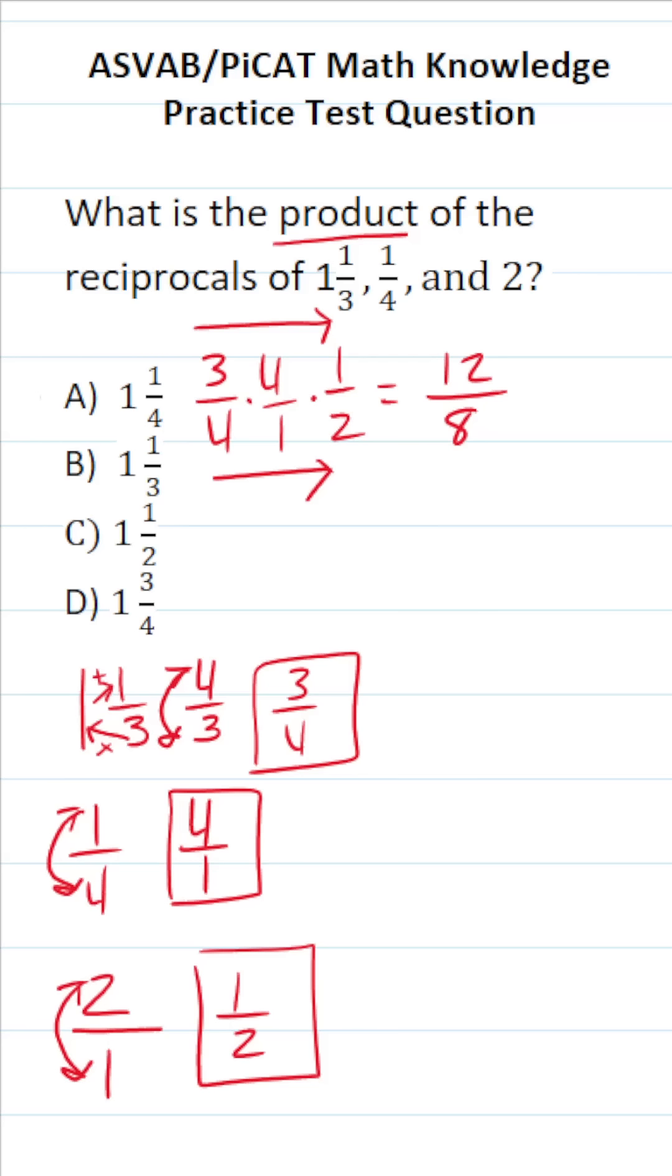This isn't an answer choice because this is an improper fraction that we're going to convert back to a mixed number via some simple long division. Again, I could read this as 12 divided by 8. How many times does 8 go into 12 without going over? That's going to be 1 time.